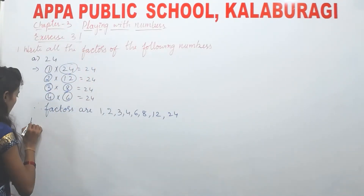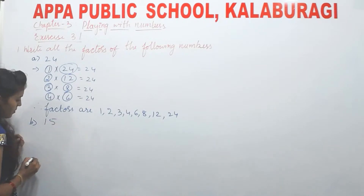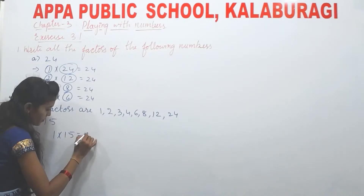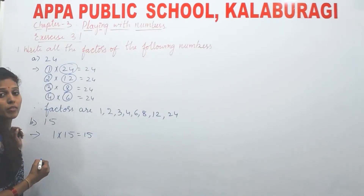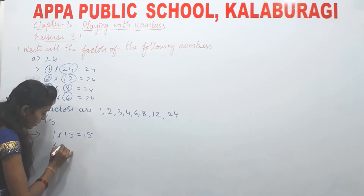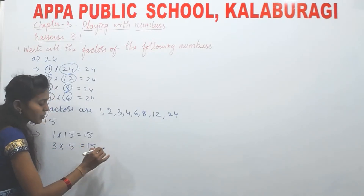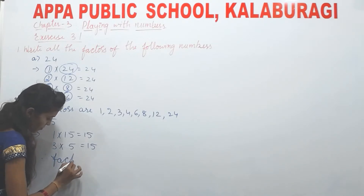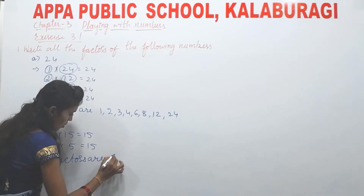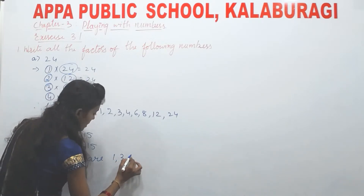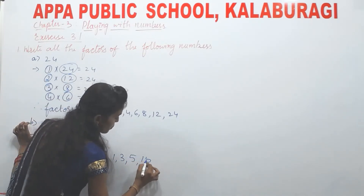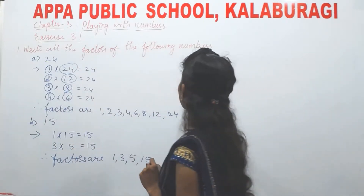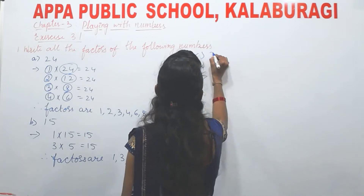Second number is 15. Let's check: 1×15=15, 3×5=15, 5×3=15, 15×1=15. So therefore the factors of 15 are 1, 3, 5, and 15.